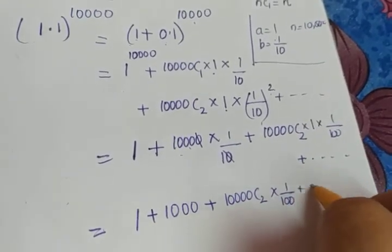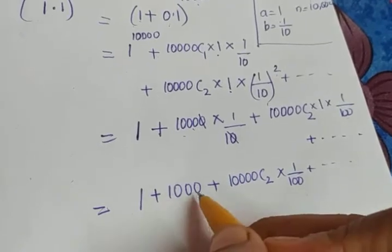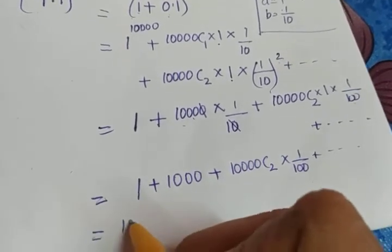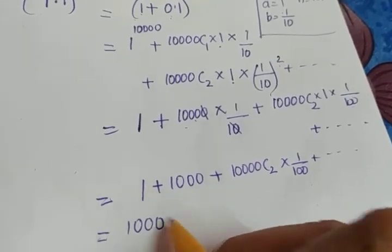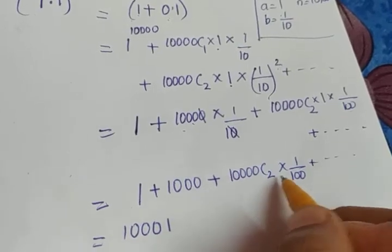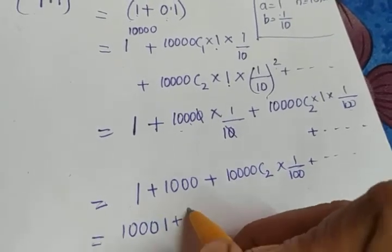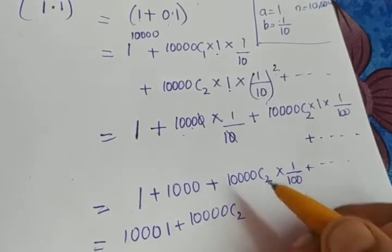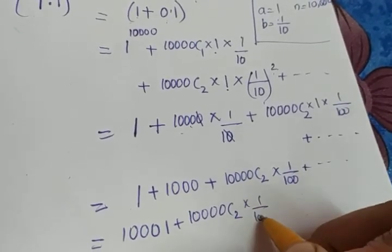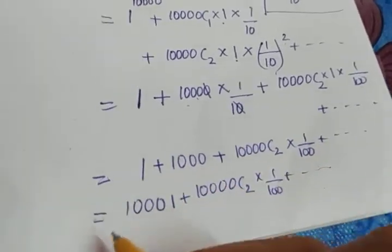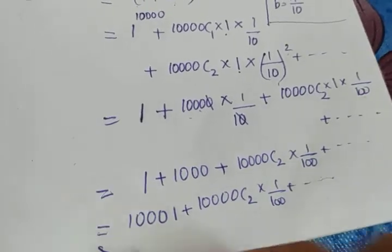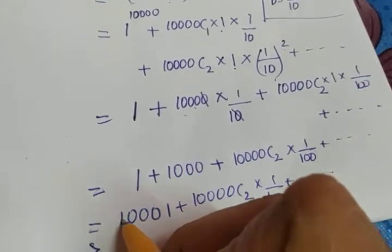Plus again there are many terms. What about 1 plus 1000? 1 plus 1000 is actually 1001. 1001 plus 10,000C2 into 1 by 100 plus etc. Many numbers are there.